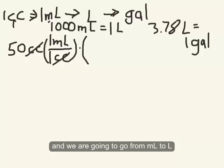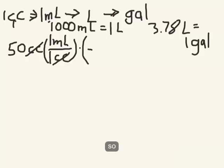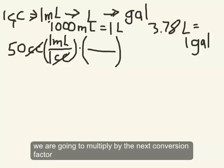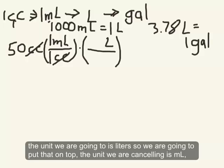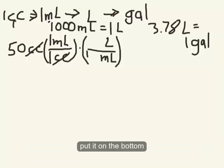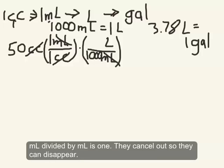And we're going to go from milliliters to liters. So when we multiply by the next conversion factor, the unit we're going to is liters, we're going to put that on top. The unit we're canceling is milliliters. We're going to put it on the bottom. Milliliters divided by milliliters is one. So they cancel out, they can just disappear.